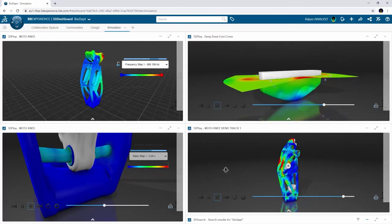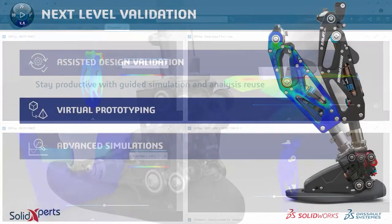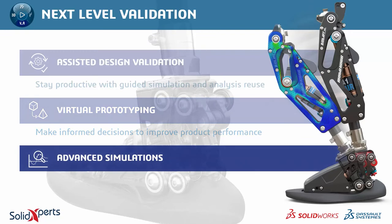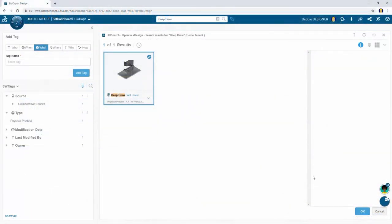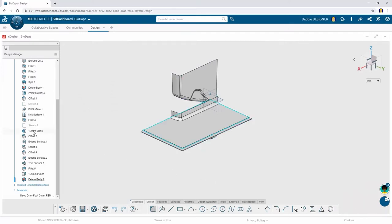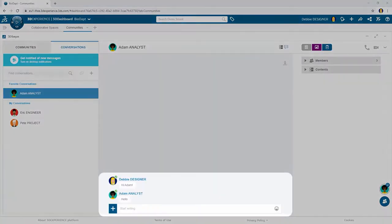The Structural Performance Engineer and Structural Mechanics Engineering roles on the 3D Experience platform enabled Adam to validate various configurations, use cases, and loading environments on the Moto Knee to better understand and communicate its real-world performance — without the cost of manufacturing or testing a single prototype. Now, based on his calculations, Adam determined that a deep-drawn steel foot cover would be the least expensive manufacturing method to create a strong cover protecting components in the Bioadapt VF2 foot. Using conversations in 3D Swim, Adam asks Debbie to make him a model for the deep-drawn analysis.